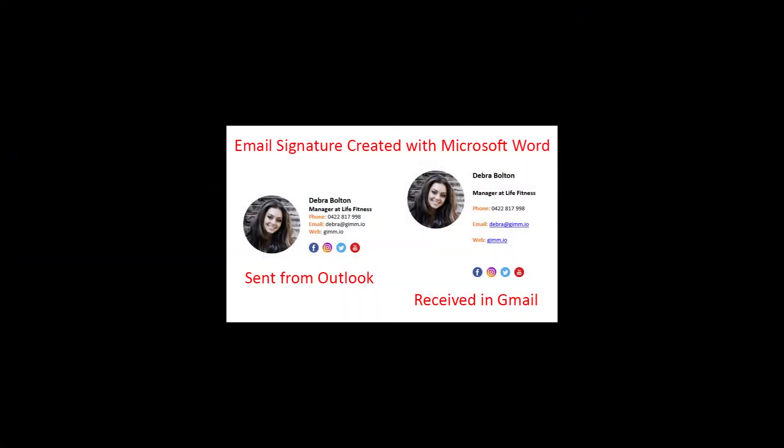Let's take a look at what an email signature looks like when you send it from Outlook to Gmail and you've created it in Microsoft Word. As you can see here, the email signature on the left is created using Microsoft Word and sent from Outlook — it looks perfectly fine. When it's received in Gmail though, have a look at all the spacing inserted between the fields, and that's sort of a good case scenario. Most of the time, the fields jumble all over the place and the signature looks completely destroyed.